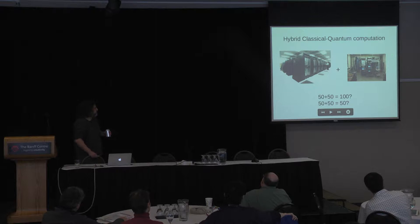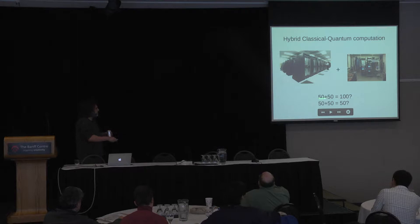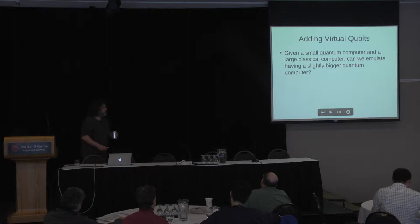We wanted to think about: what if you use these two things together? Take an infantile quantum computer with maybe 50 qubits in 10 years, and a supercomputer that can simulate 50 qubits. When you put them together, can you simulate something equivalent to 100 qubits? Before we started, the only obvious way was that both together could still only simulate 50 qubits.